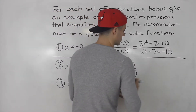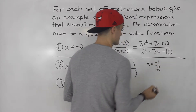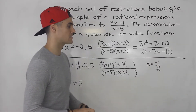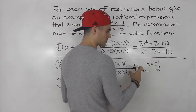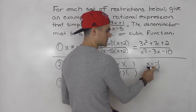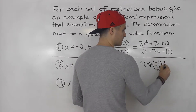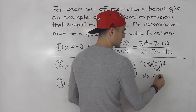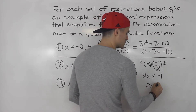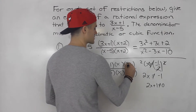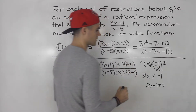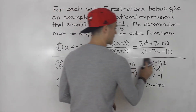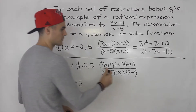For x cannot equal negative one half: whenever there's a negative, I like to put it in the numerator so the denominator stays positive. To find the factor, multiply both sides by the denominator to get rid of it — multiply by 2, the 2s cancel, giving 2x cannot equal negative 1. Bring the negative 1 over: 2x plus 1 cannot equal 0. So the factor is (2x+1). If you isolate for x, you get x cannot equal negative one half, which is what we originally had. That is the answer.